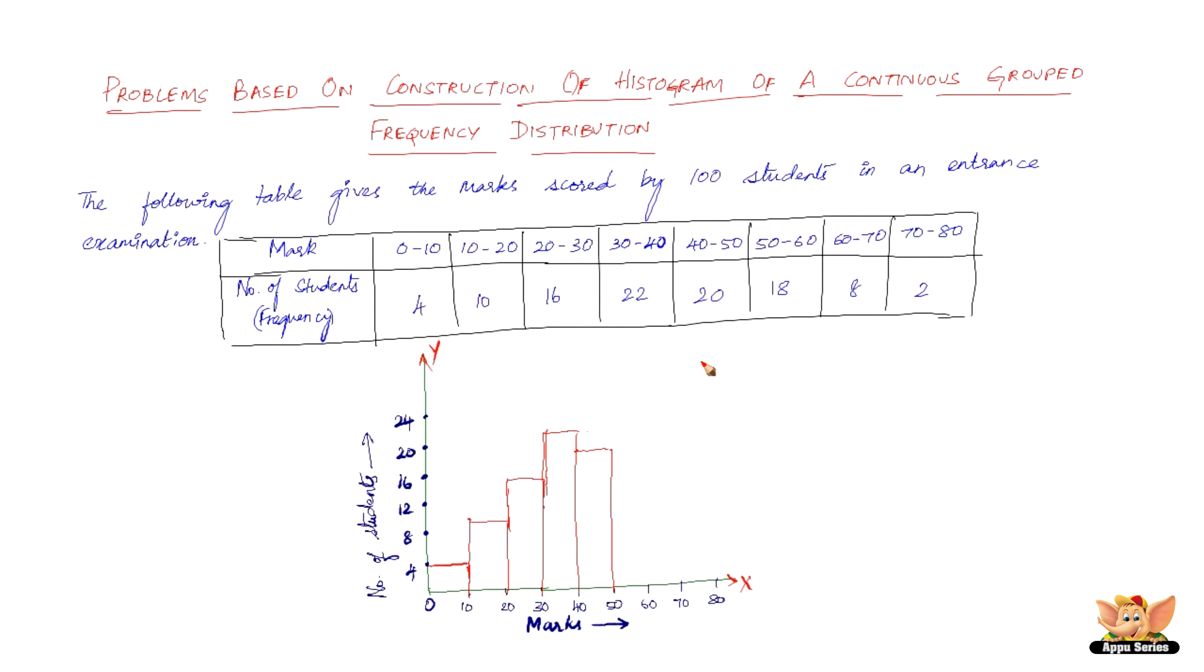And 50 to 60 is 18. 18 is between 16 and 20. So here it is 18. And 60 to 70 is 8. So here is 8. And 70 to 80 is 2.